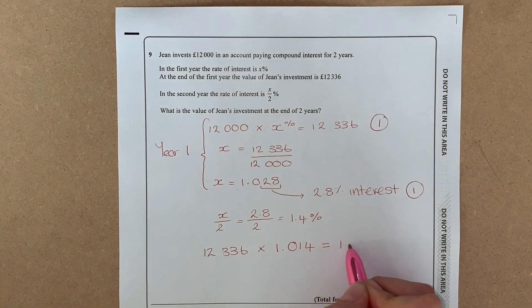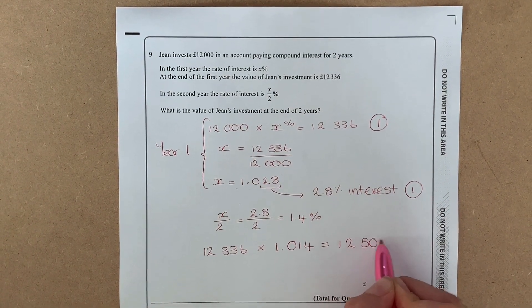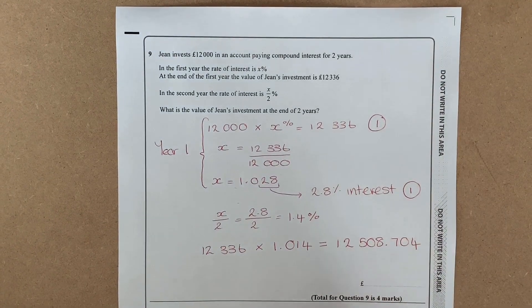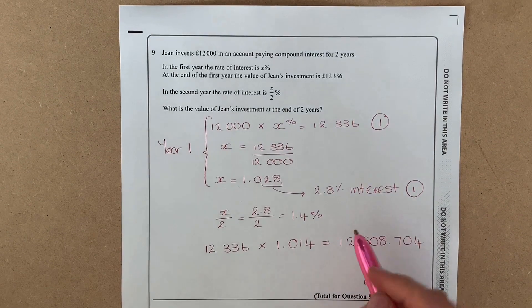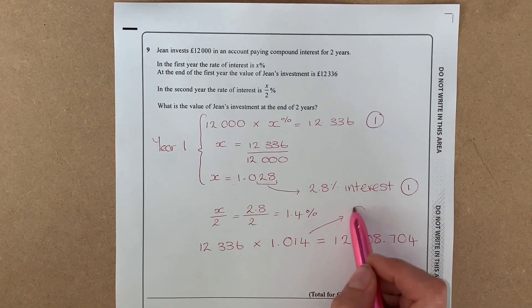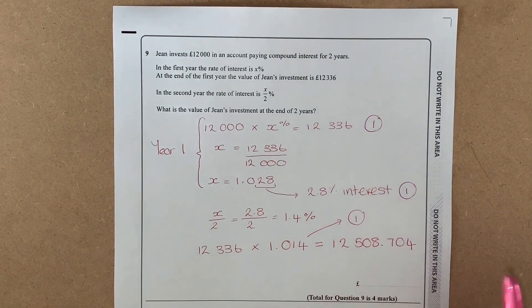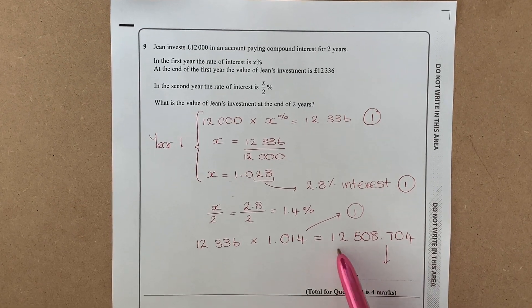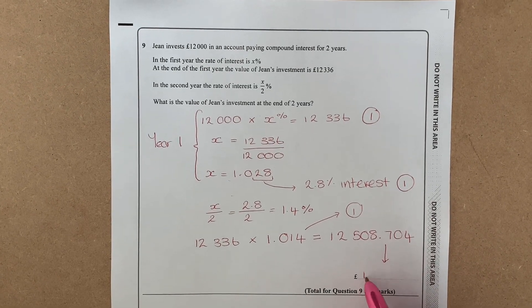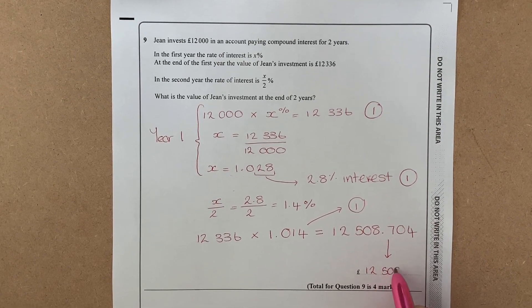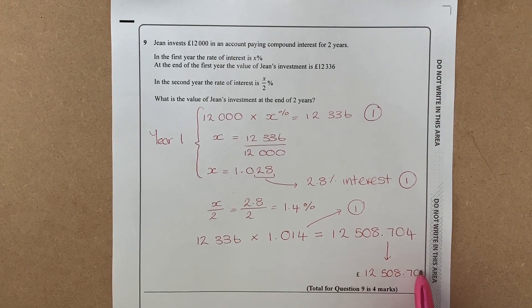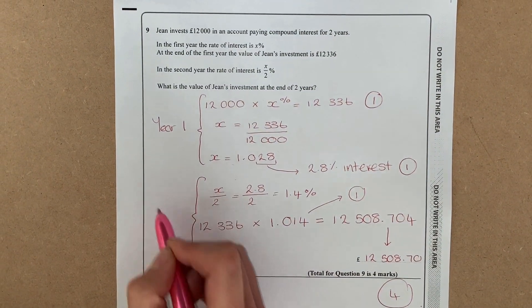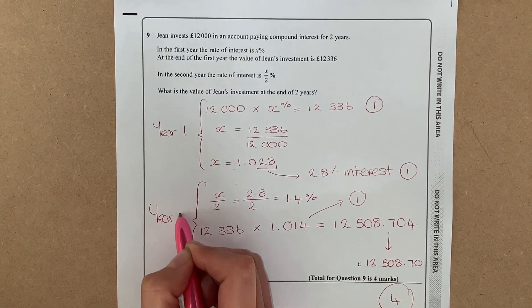So just to talk about some more marks: we're getting a mark for knowing that that was our multiplier, and then our final mark comes from our answer. If it's money we can't have three decimals, so £12,508.70. A four-mark question in total, and just to tidy it up, that was the end of year two.